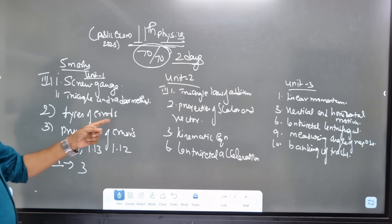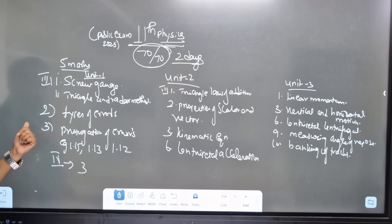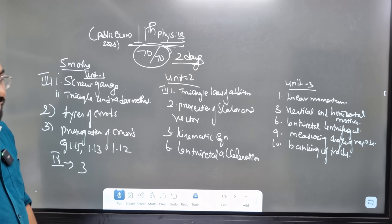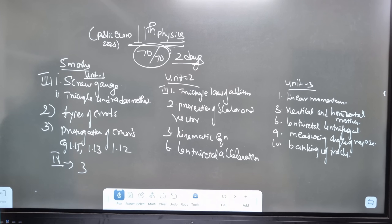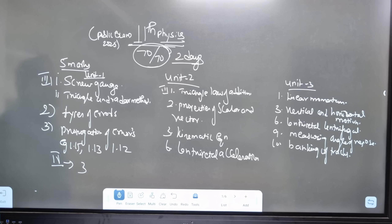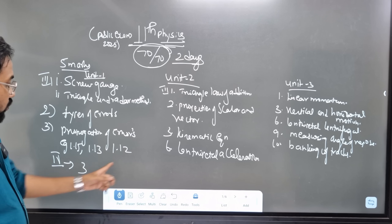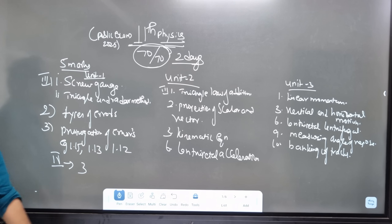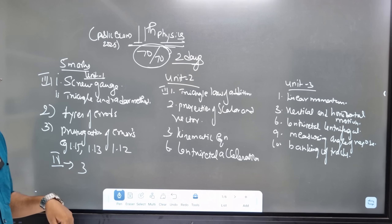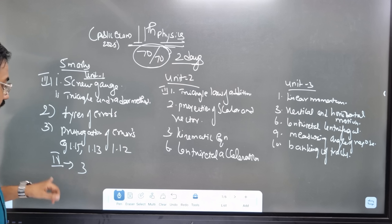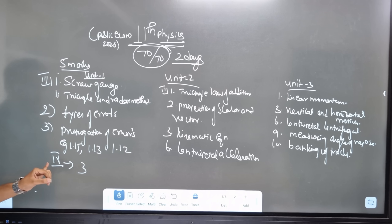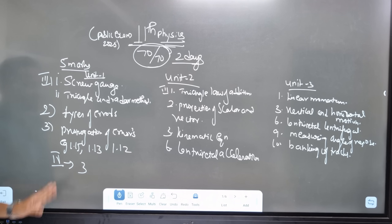For Unit 1, study the types of error and the propagation of error. If you want to see examples, there are sums — for example, sum 1.15 and sum of 4. These are important practice problems for Unit 1.